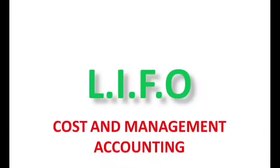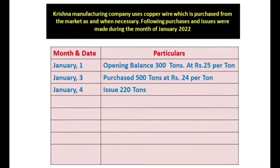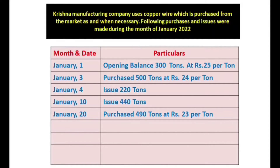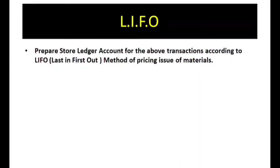We will now discuss a problem. Krishna Manufacturing Company uses copper wire purchased from the market as and when necessary. Following purchases and issues were made during January 2022: January 1st, opening balance 300 tons at Rs.25 per ton; January 3rd, purchased 500 tons at Rs.24 per ton; January 4th, issued 220 tons; January 10th, issued 440 tons; January 20th, purchased 490 tons; January 25th, issued 300 tons; January 26th, issued 200 tons; January 31st, surplus 20 tons returned to store out of quantity issued on 4th January.